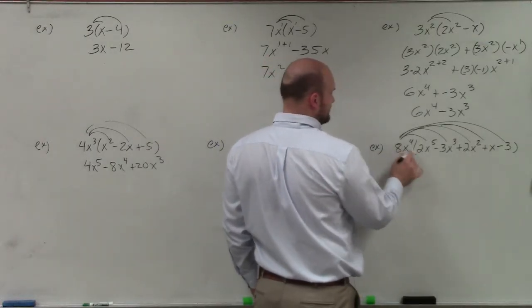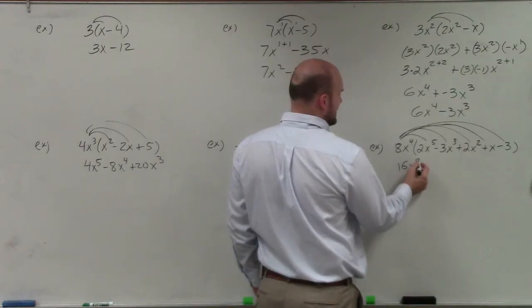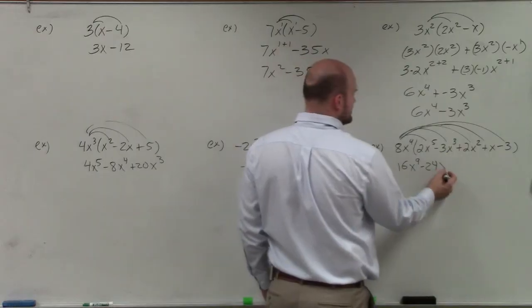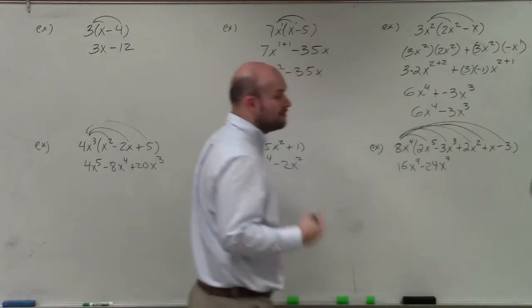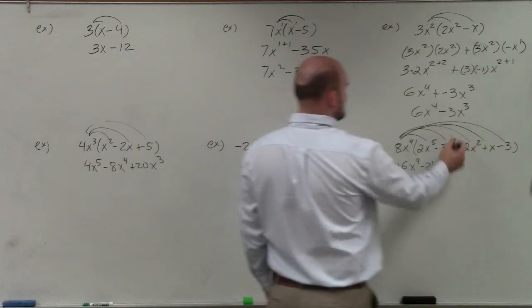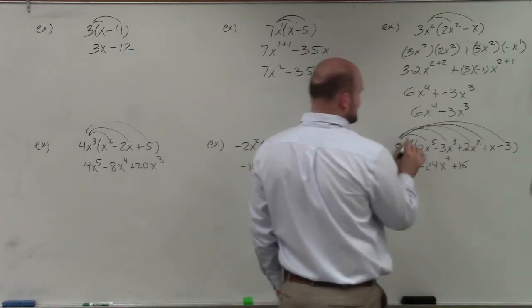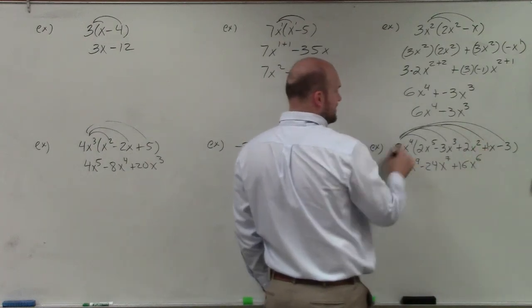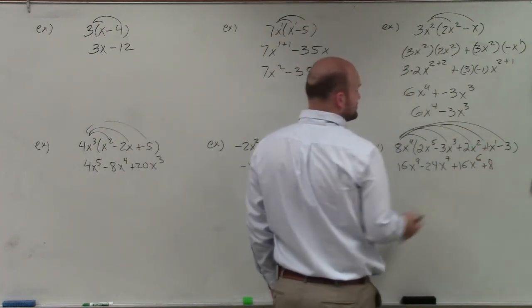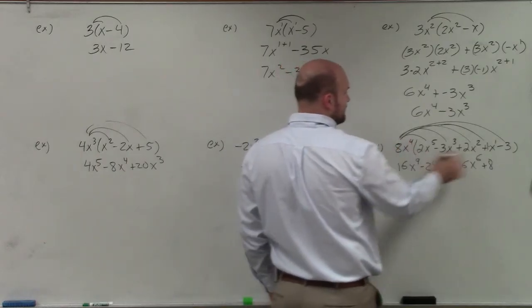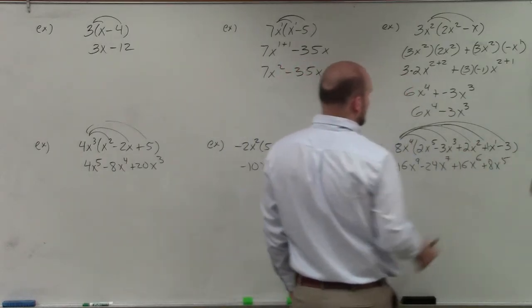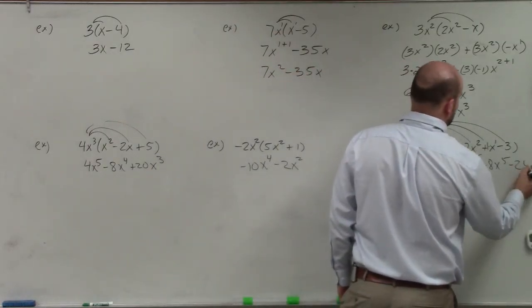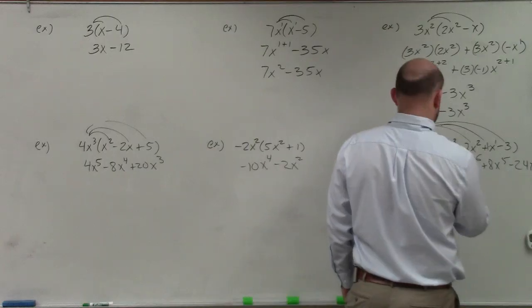8 times 2 is 16. x to the fourth times x to the fifth is x to the ninth. 8 times negative 3 is negative 24. x to the fourth times x cubed is x to the seventh. Again, remember we're multiplying coefficients, adding powers. 8 times 2 is a positive 16. x to the fourth times x squared is x to the sixth. 8 times 1 is going to be a positive 8. And x to the fourth times x to the first is x to the fifth. And then 8 times negative 3 is negative 24. And there's no variable, so it's negative 24x to the fourth power.